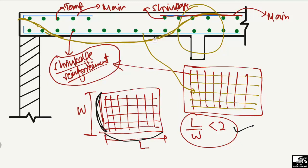For a one-way slab, we provide the main longitudinal reinforcement in one direction while the shrinkage reinforcement is provided in the other direction. Hope you understand today's lecture — don't forget to subscribe to the channel for more civil engineering videos.